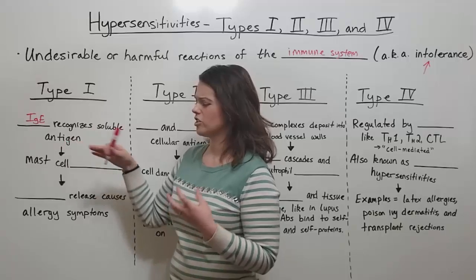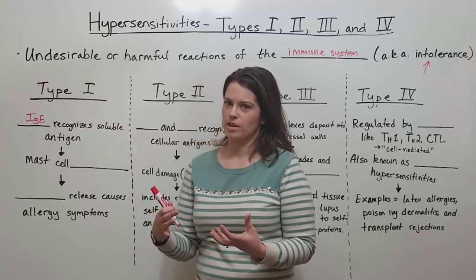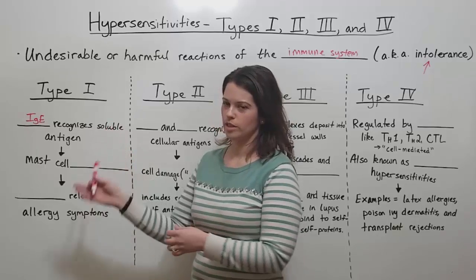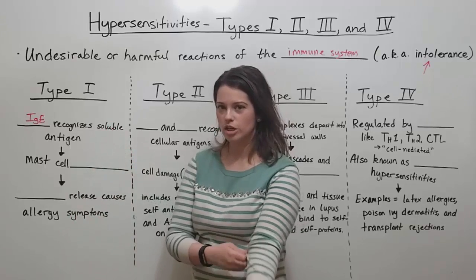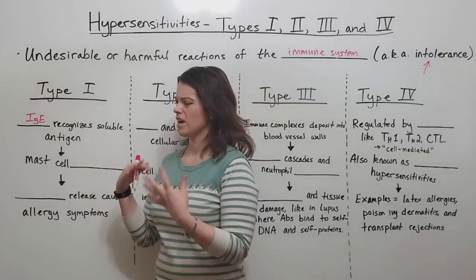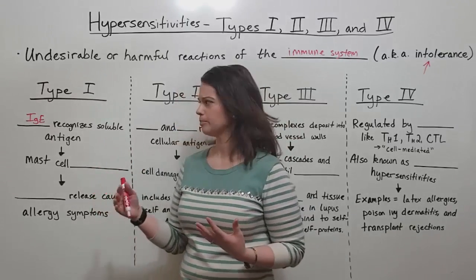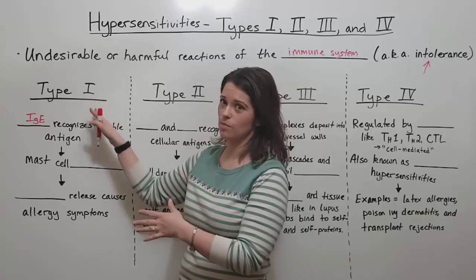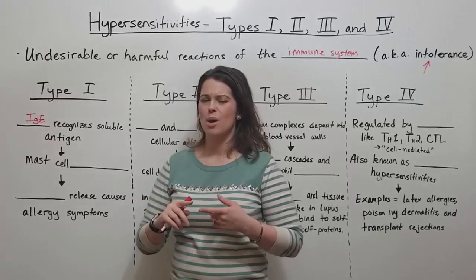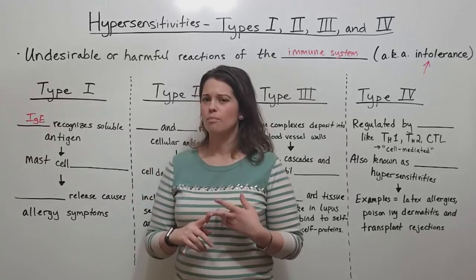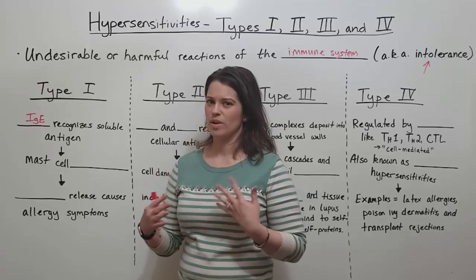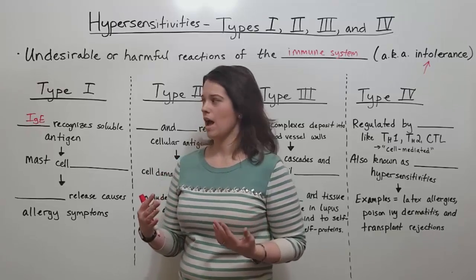What does this mean? Antigen is just the thing being recognized by the immune system. In this case, it is something soluble — not something that is cellular or at the tissue level, but rather something that is dissolved and floating around in the body. In particular, with type 1 hypersensitivities, IgE is recognizing things like pet dander, mold, pollen — things we associate with seasonal allergies.